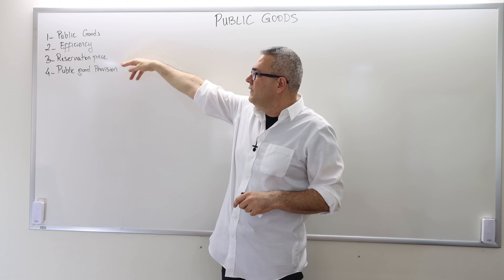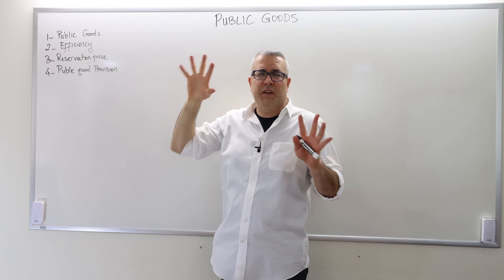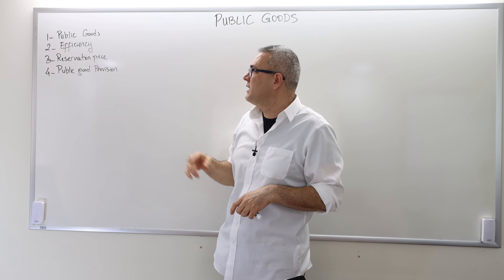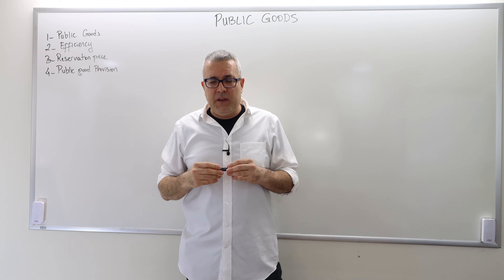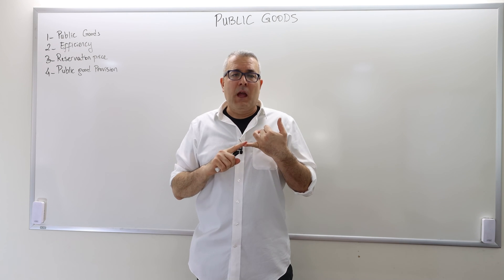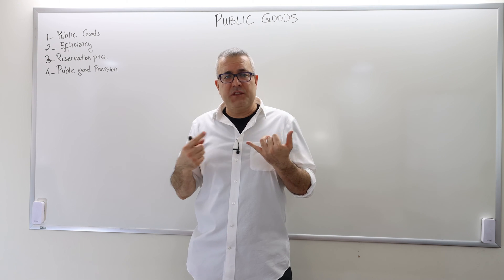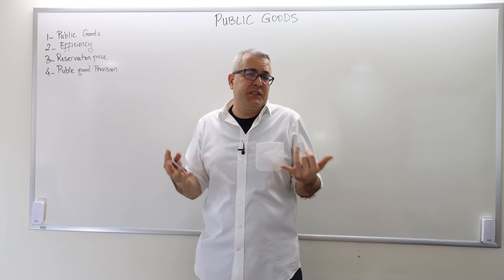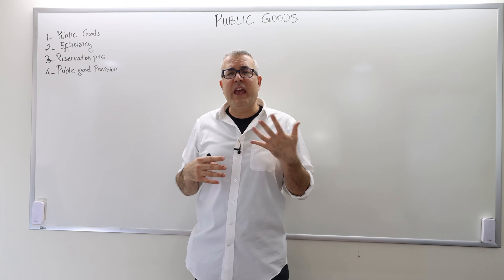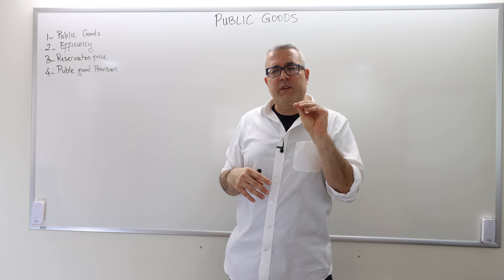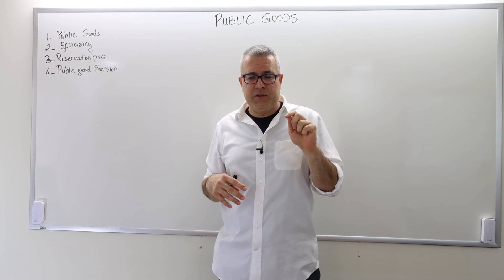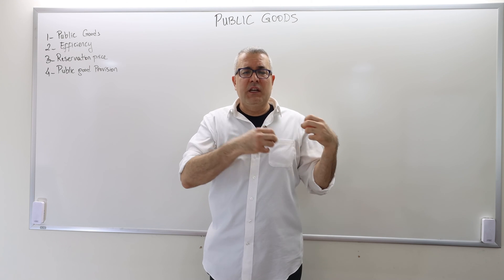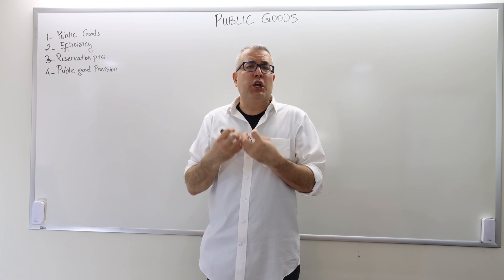So let's start with public goods. I'll continue in the next episode with the reservation price, efficiency, and a model where we discuss those concepts in much more detail. Public goods is basically a kind of good where everyone — all the consumers, all the agents in the society — can consume the same amounts as much as they want to. One important characteristic of a public good is that the consumption of a public good by some agents is not going to diminish the good itself.